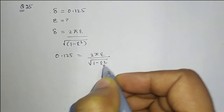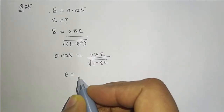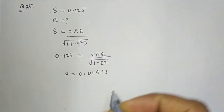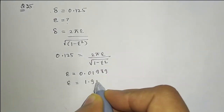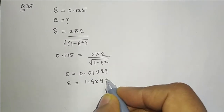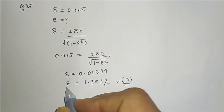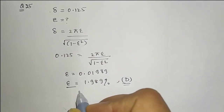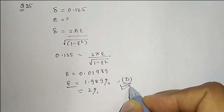After solving, we get ζ equal to 0.01989, which in percentage is approximately 1.989%. From the given options, the value of ζ in percentage is closest to 2%, so option D is correct.